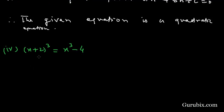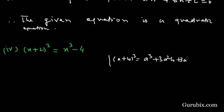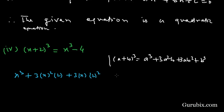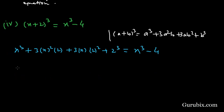In Part 4, we are given (x + 2)³ = x³ - 4. We expand (x + 2)³ using the identity (a + b)³ = a³ + 3a²b + 3ab² + b³. Substituting, we get x³ + 3·x²·2 + 3·x·2² + 2³ = x³ - 4, which gives x³ + 6x² + 12x + 8 = x³ - 4.